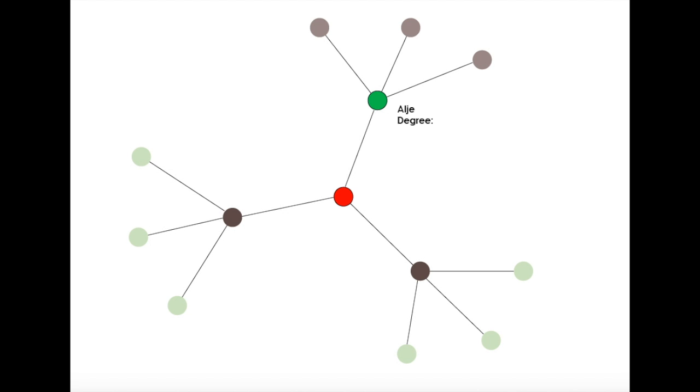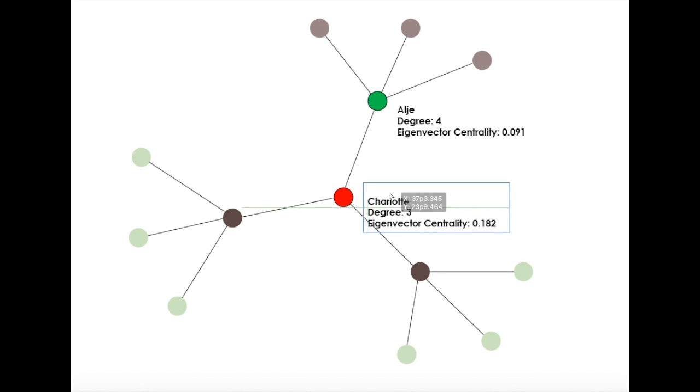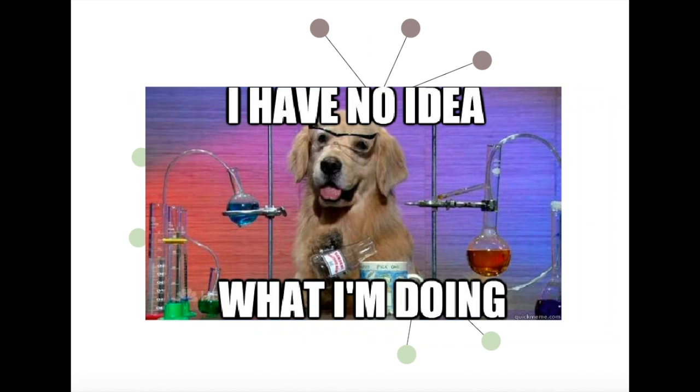To put it in numbers, I have a degree of 4 and an eigenvector centrality score of 0.091. Charlotte, on the other hand, has a degree of 3. But due to her friends being well connected, her eigenvector centrality score is 0.182. Trust us, we ran the numbers.